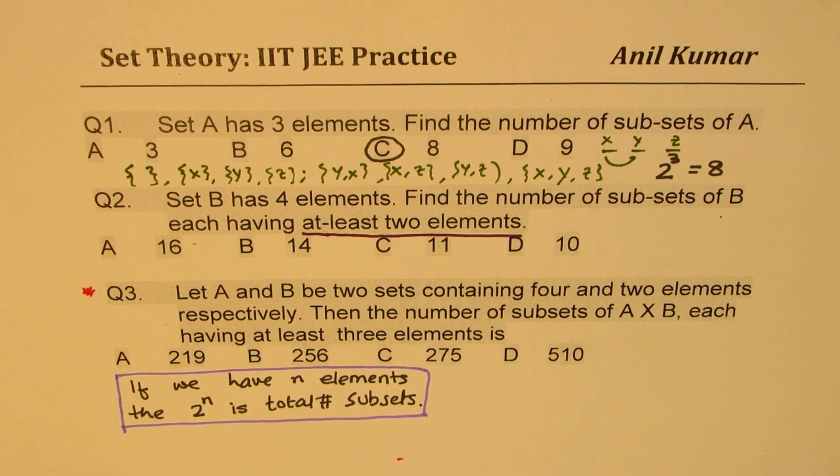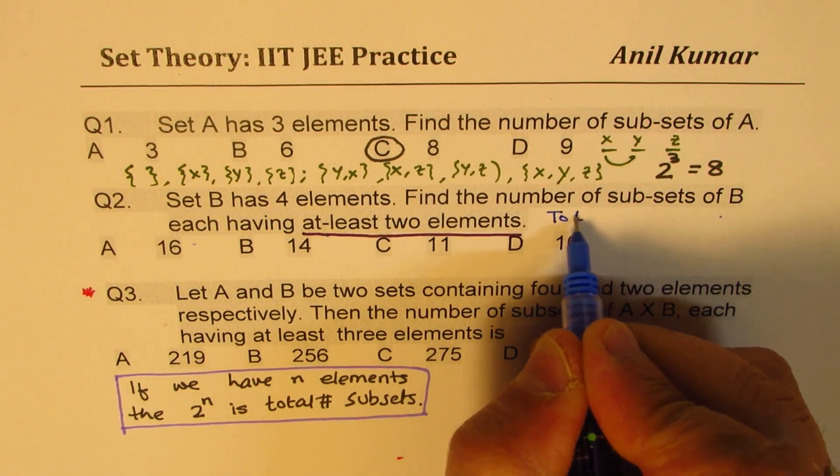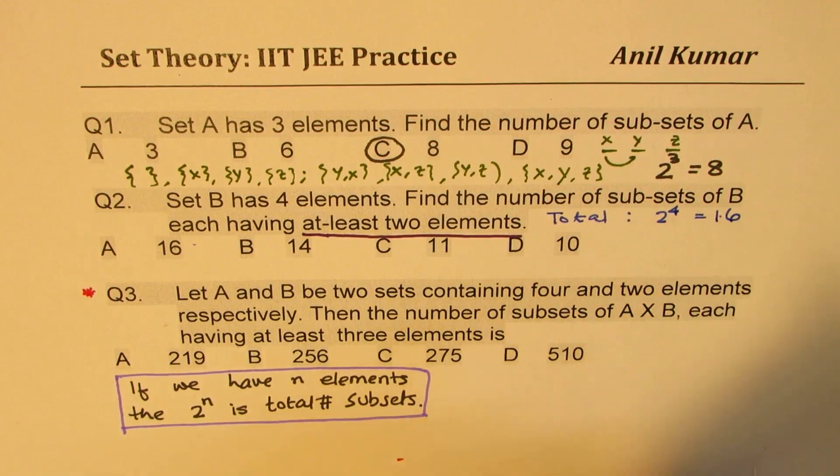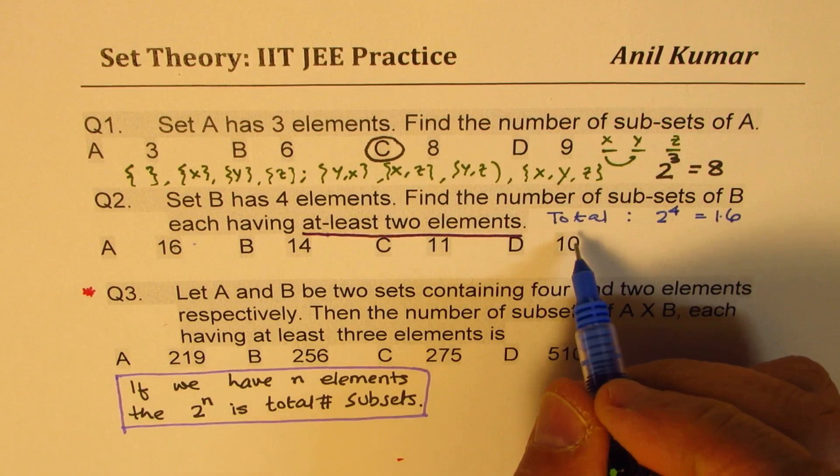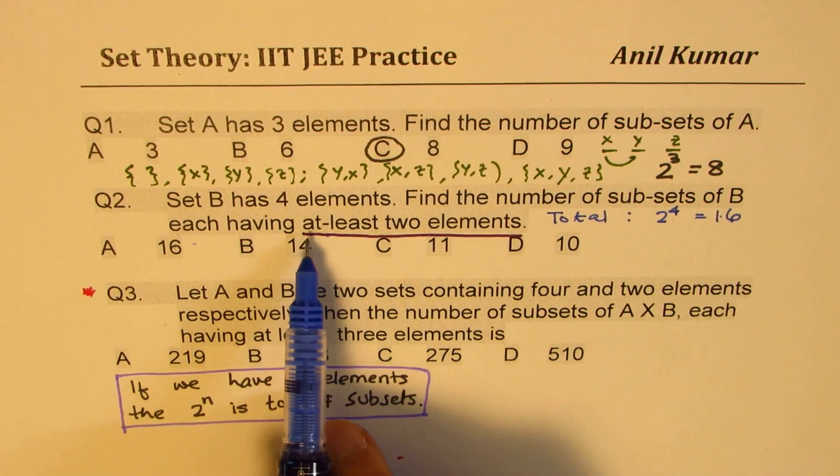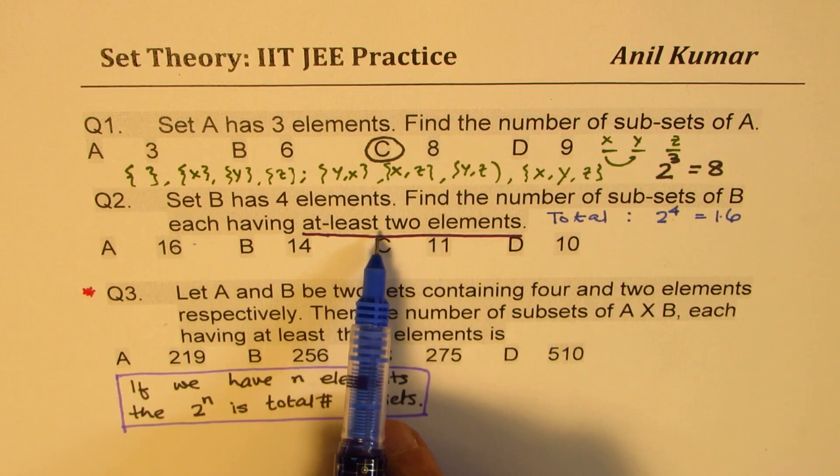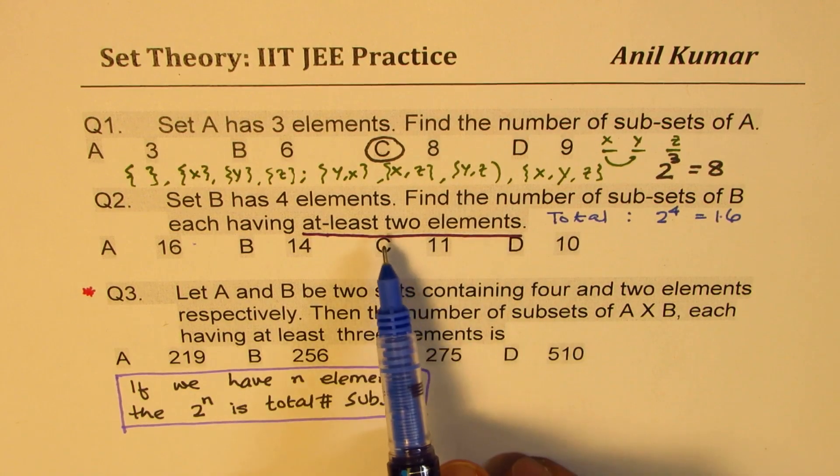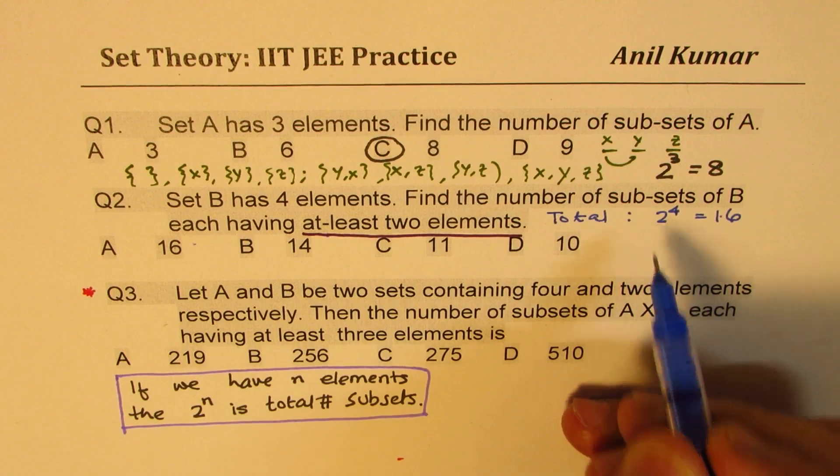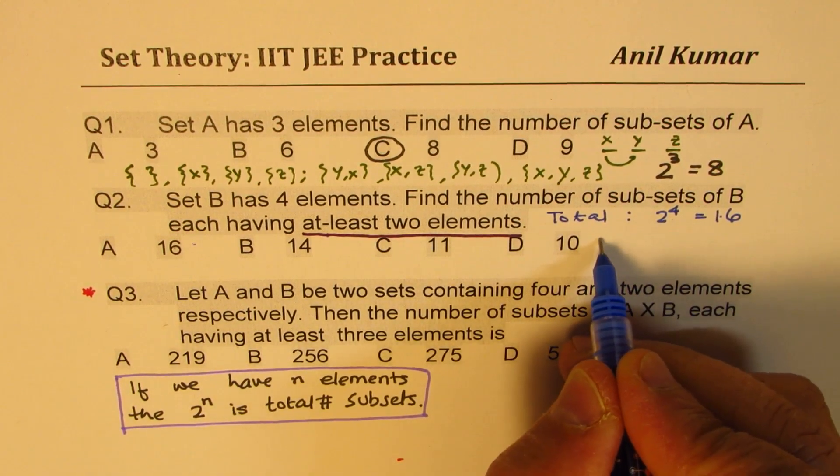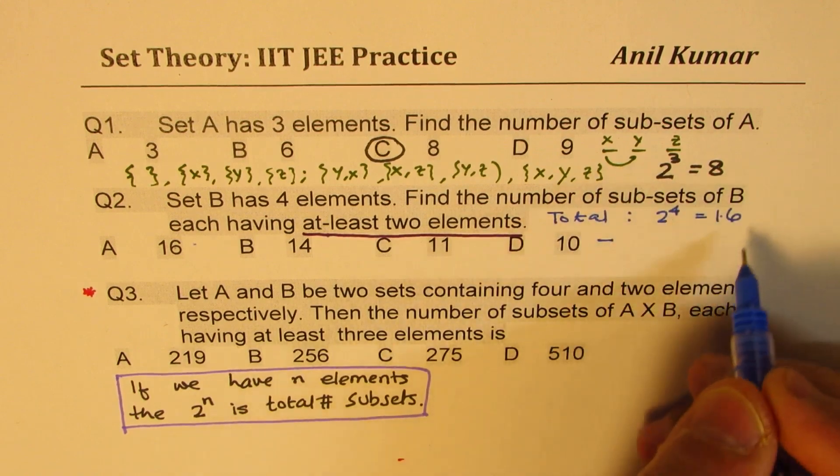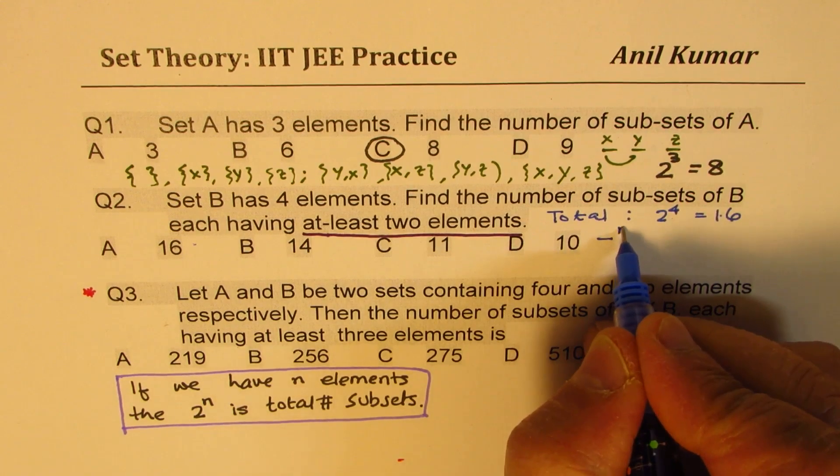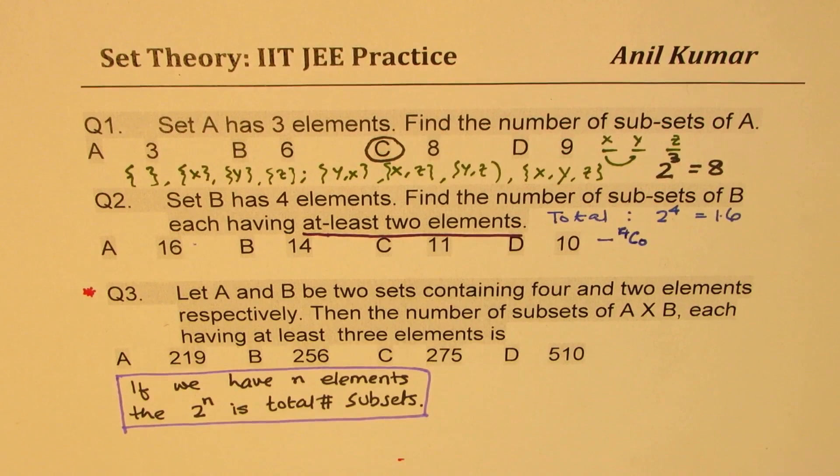So one thing is very clear. Since we have four elements, the total is 2 to the power of 4, which is 16. What is not allowed is the ones which are with one element, and which is with no element at all. So how many sets can you form which have no element? You could also use the combination. So what we have to take away from here is that out of these four, we are taking the one which has no element. So we can say 4C0 gives you that combination.